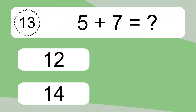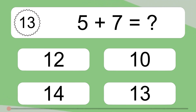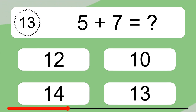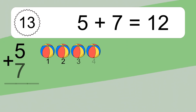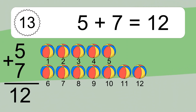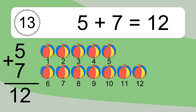5 plus 7 equals what? 5 plus 7 equals 12. Let's count it: 1, 2, 3, 4, 5, 6, 7, 8, 9, 10, 11, 12.